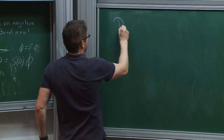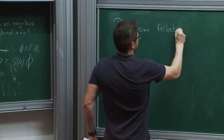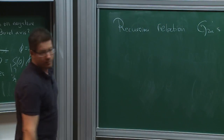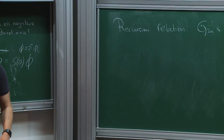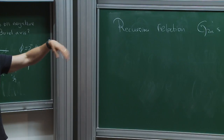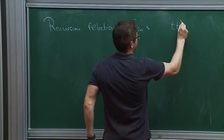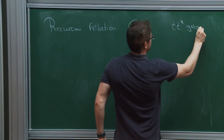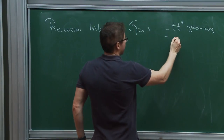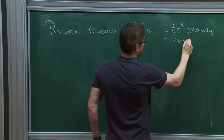Amazingly, there is a recursion relation between the various G₂Ns. I don't know why such a recursion relation exists, but it does, so the G₂Ns are not entirely independent. This recursion relation is what's known as tt* geometry. A property of this recursion relation is that it can be thought of as an integrable system, which we're going to see soon.